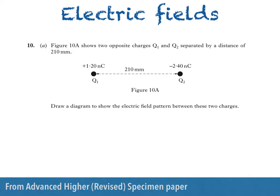Part A says, Figure 10A shows two opposite charges, Q1 and Q2, separated by a distance of 210 mm. Draw a diagram to show the electric field pattern between these two charges.